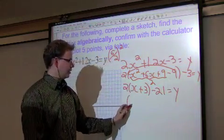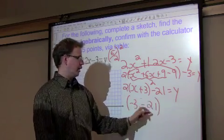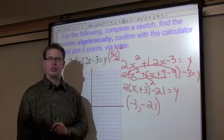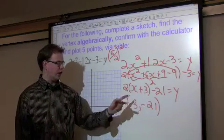The vertex, as you may see, is negative three, negative 21. As you remember, you must always ask, what are you subtracting? You are subtracting a negative three.